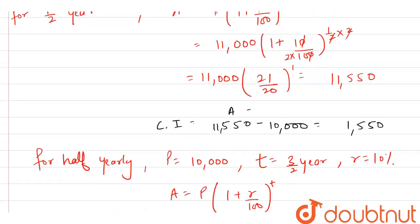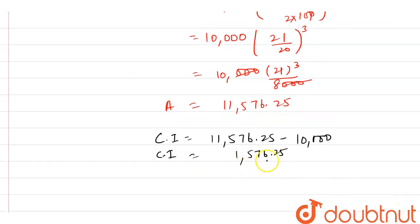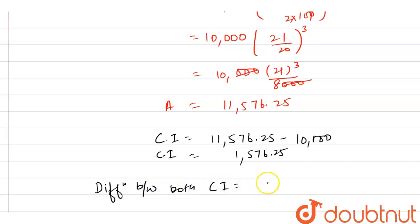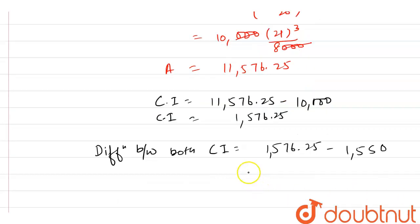As the question asks for the difference between compound interest compounded yearly and half yearly: CI half yearly = 1,576.25 rupees and CI yearly = 1,550 rupees. The difference = 1,576.25 − 1,550 = 26.25 rupees. Hence, this is our final answer.